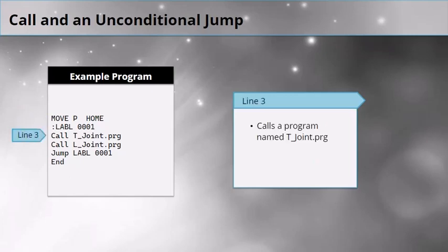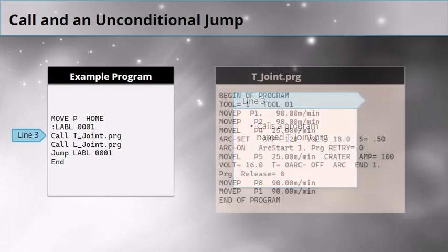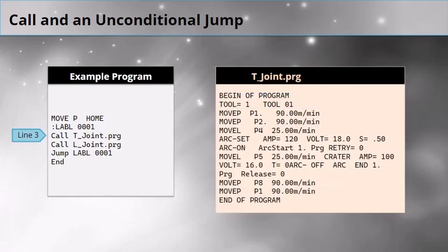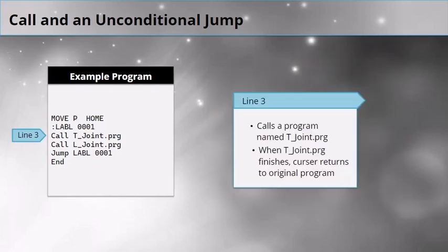Line 3 calls a program named t-joint. When this line executes, the robot completely leaves the current program and runs the t-joint program. When program t-joint finishes, the cursor returns to the original program, one line below that call statement.